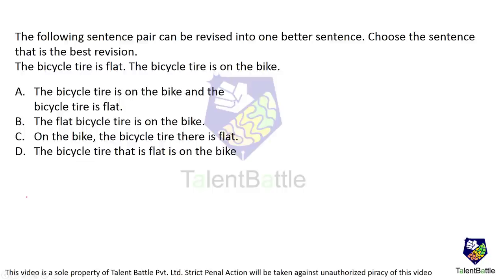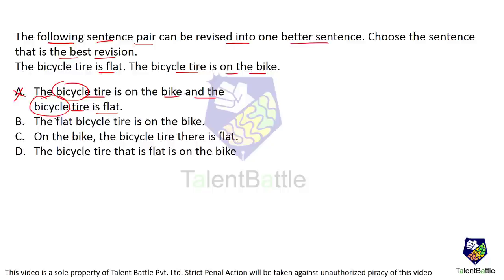The following sentence pair can be revised into one better sentence. Choose the best revision. The two sentences are: 'The bicycle tire is flat' and 'The bicycle tire is on the bike.' Option: 'The bicycle tire is on the bike and the bicycle tire is flat.' This uses 'bicycle tire' twice, which is redundant and not concise — it is not a good revision. Another option: 'The flat bicycle tire is on the bike.' This is a possible answer, so we'll keep it in mind and check other options.